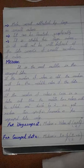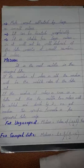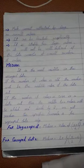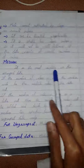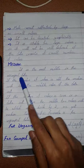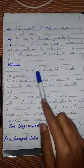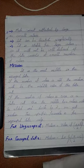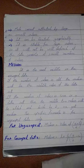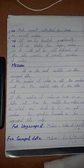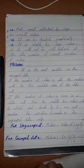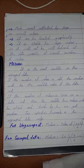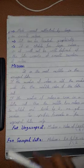First of all we have to see what is the definition of median, or what is median. It is the most middle value in the arranged data. In a data set, when it is arranged, the most middle value is called the median.